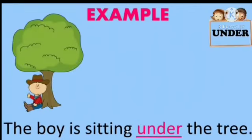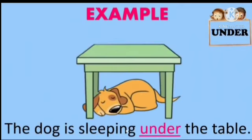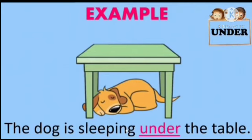Now we'll talk about 'under.' The boy is sitting under the tree — can you see the picture? The ball is under the table. Where is the dog? The dog is sleeping under the table. Here 'under' is the preposition — it tells us where the dog is.